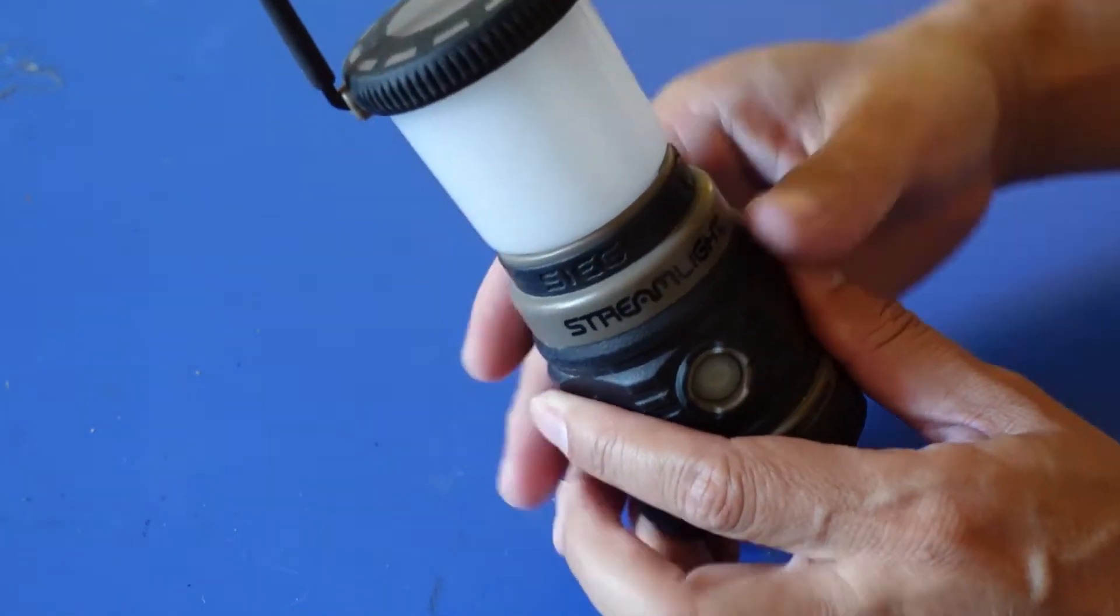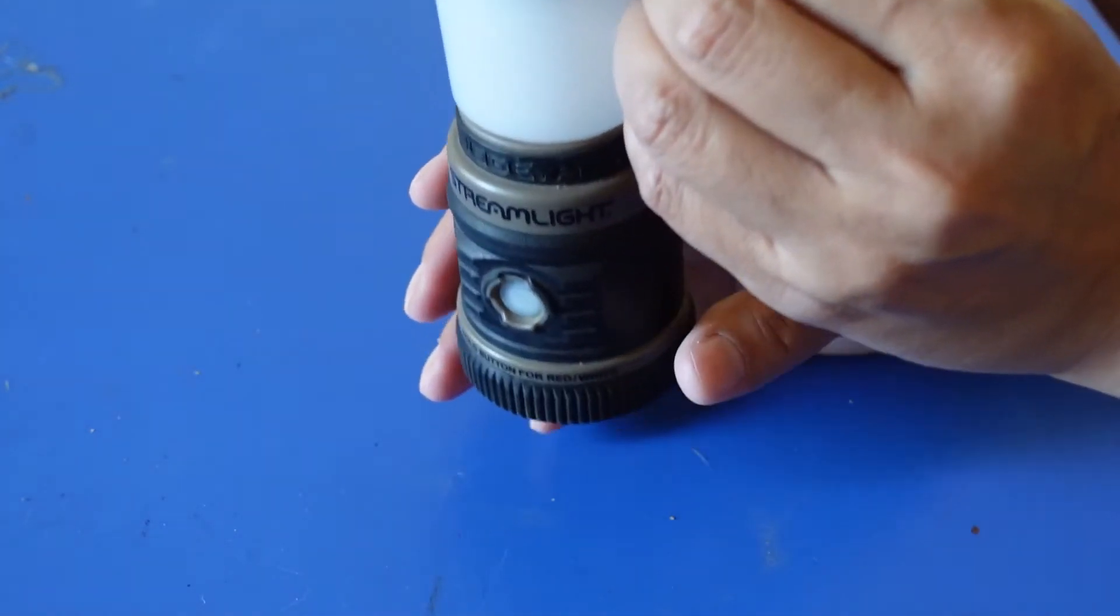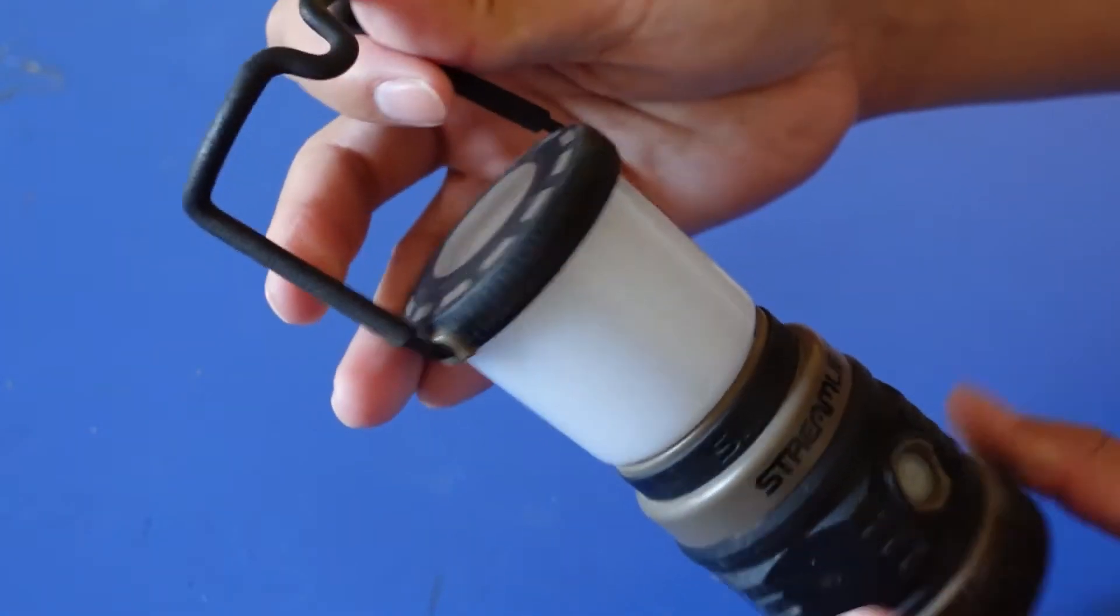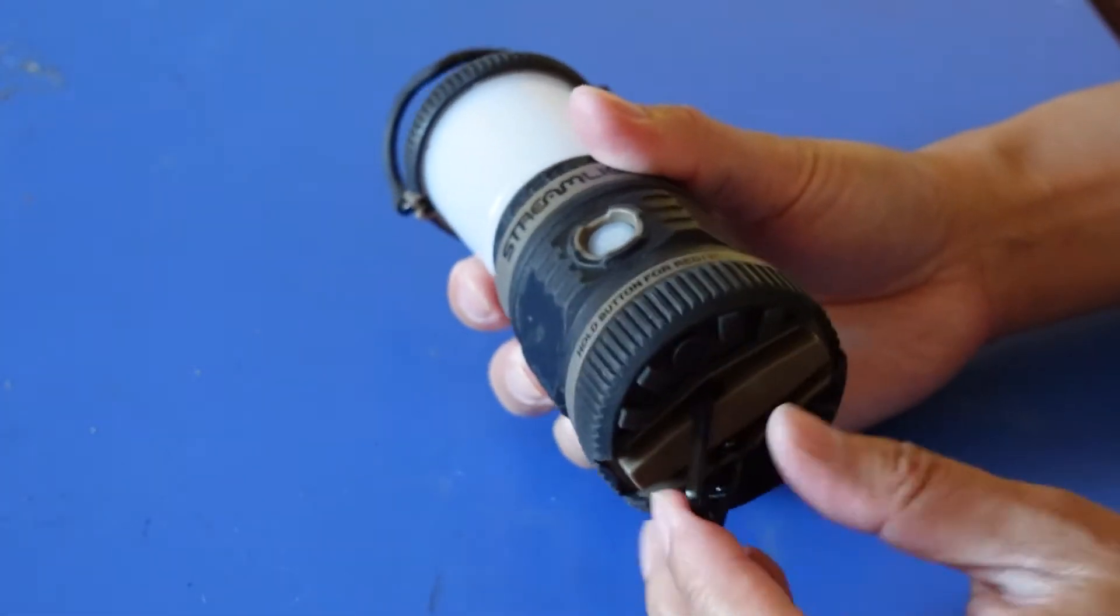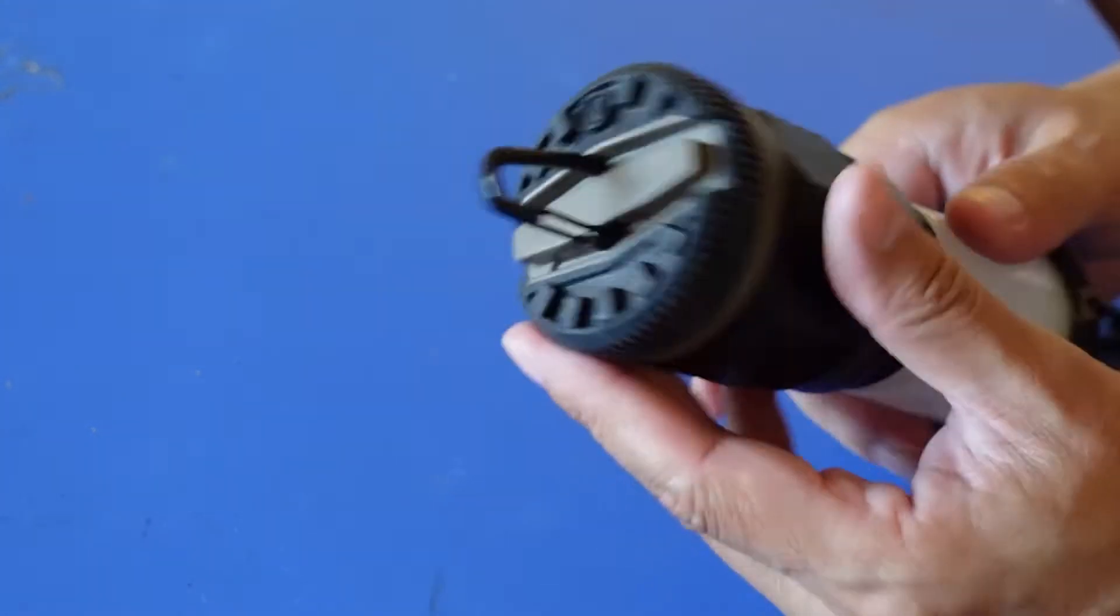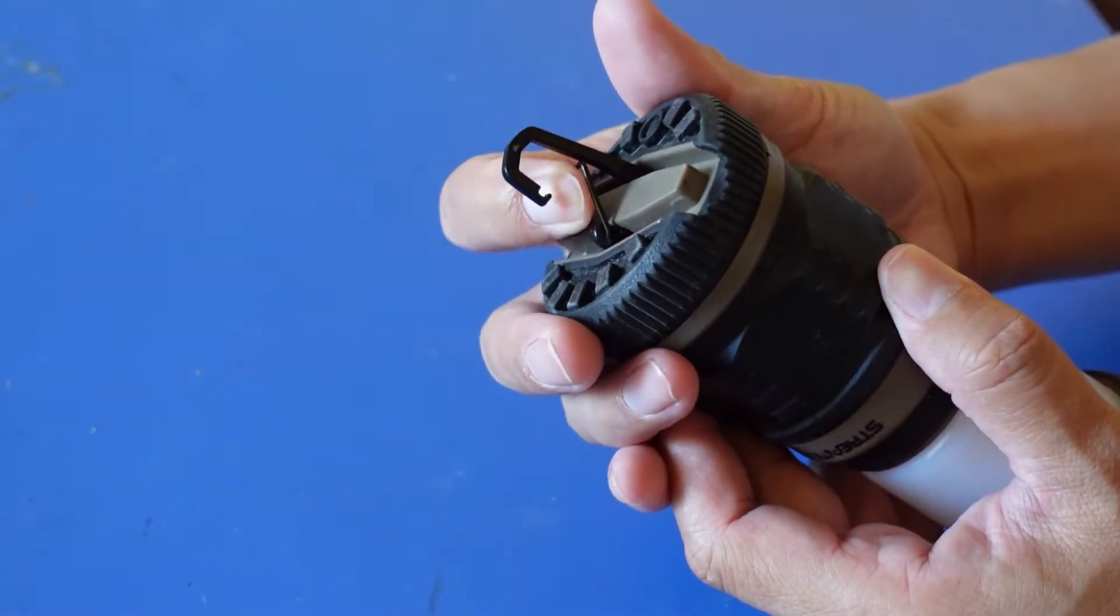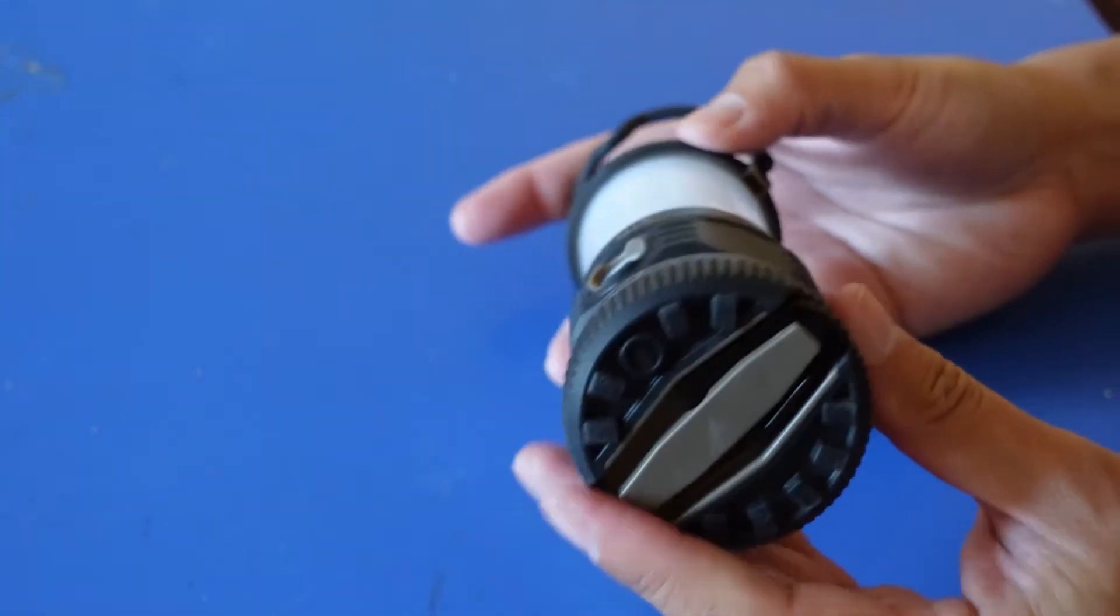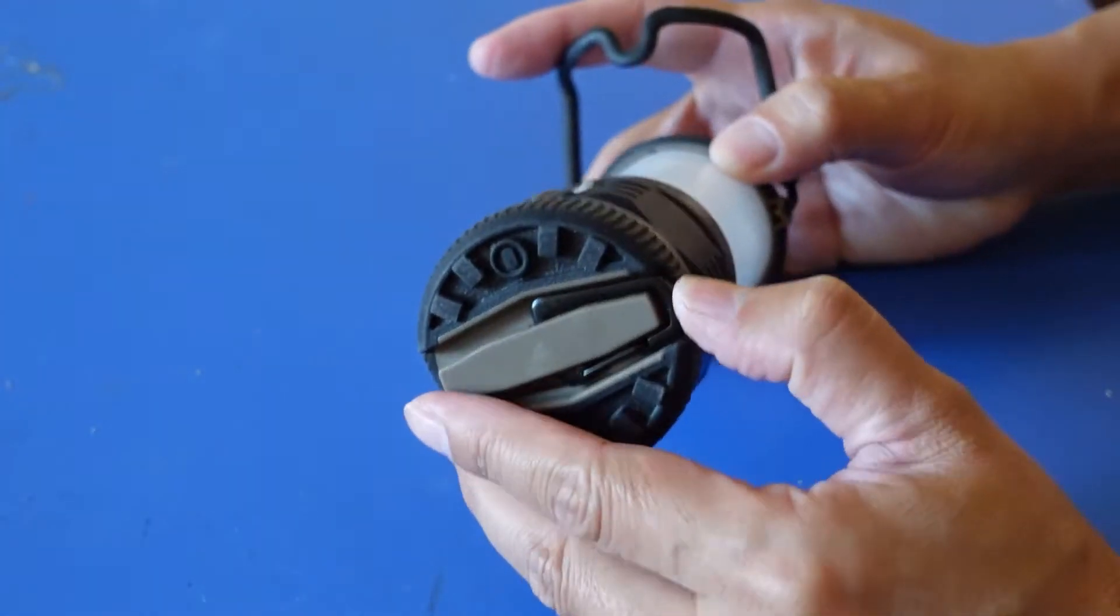On the top, you have this hanger type, so you can hang it up. On the bottom, you'll have a little clip. You can clip it on a wire and hang it upside down. This is what the bottom looks like.